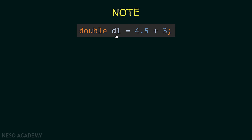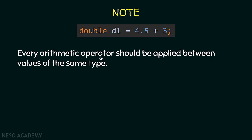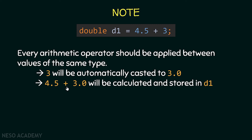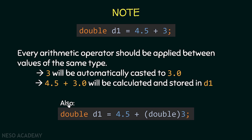Another note: consider the expression 'double d1 = 4.5 + 3'. Every arithmetic operator must be applied between values of the same type. Since we have a double and an integer, 3 will be automatically cast to 3.0 — this is implicit casting. Then 4.5 + 3.0 is calculated and stored in d1. We always convert to the stronger (wider range) type, so the integer converts to double, not the other way around. You can also use explicit casting to cast 3 to a double manually.